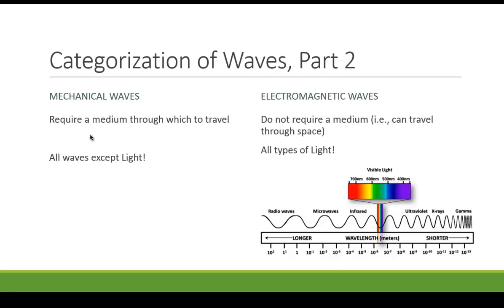gamma rays, all are electromagnetic waves. They can travel through a vacuum. They do not require a medium through which to travel. We're not going to spend much time on those in this class, but do know that that's the other way that we can categorize waves.